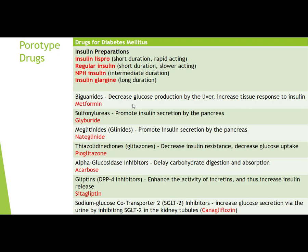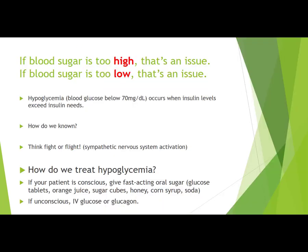Sulfonylureas and meglitinides promote insulin secretion by the pancreas. Glitazones like pioglitazone decrease insulin resistance. Alpha-glucosidase inhibitors delay carbohydrate digestion and absorption. Gliptins enhance incretin activity to increase insulin release — an example is sitagliptin. SGLT2 inhibitors such as canagliflozin increase glucose secretion via the urine by inhibiting SGLT2 in the kidney tubules.